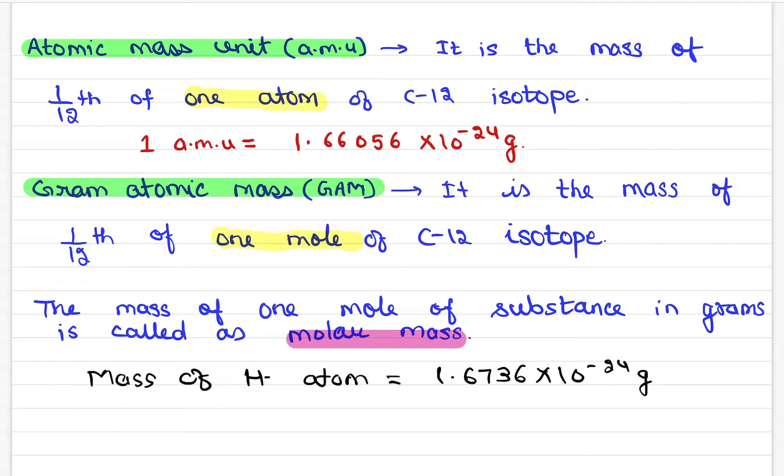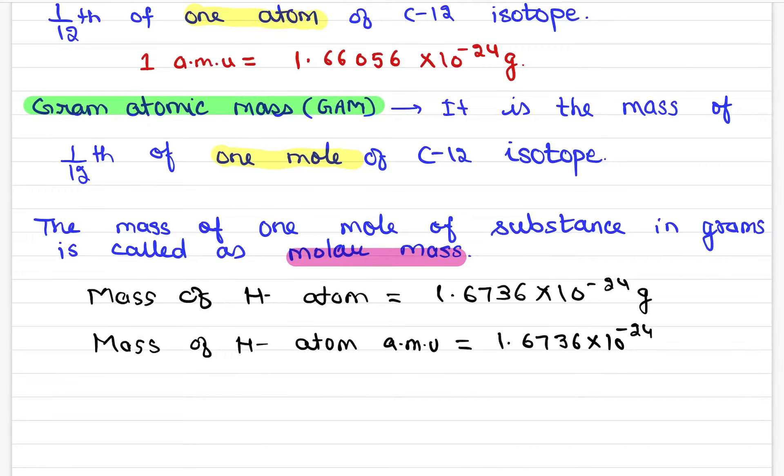Now, if you ask the mass of hydrogen atom in AMU, you need to tell the mass of hydrogen atom in AMU. How do you get the mass of AMU? The value given is 1.6736 × 10^-24. You divide by 1 AMU. 1 AMU is red, we have written in the color. So, 1.66056 × 10^-24.